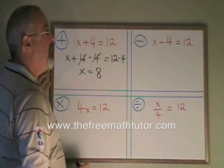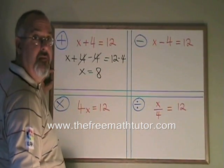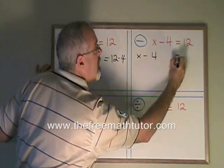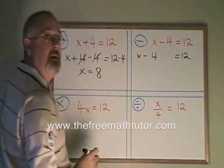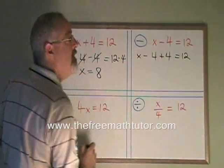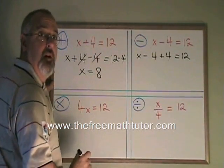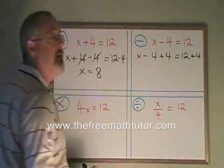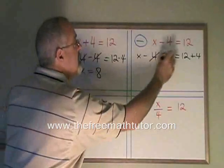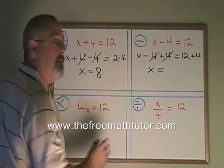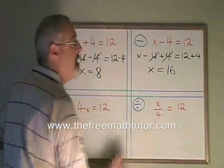Subtraction. Here my x is having a 4 subtracted from it. The opposite of subtraction is addition, so I add a 4 to that side. But what I do on one side, I have to do on the other, so I am also adding a 4 on the right side. These cancel. My x is isolated and is equal to 12 plus 4, which is 16. I have my answer.